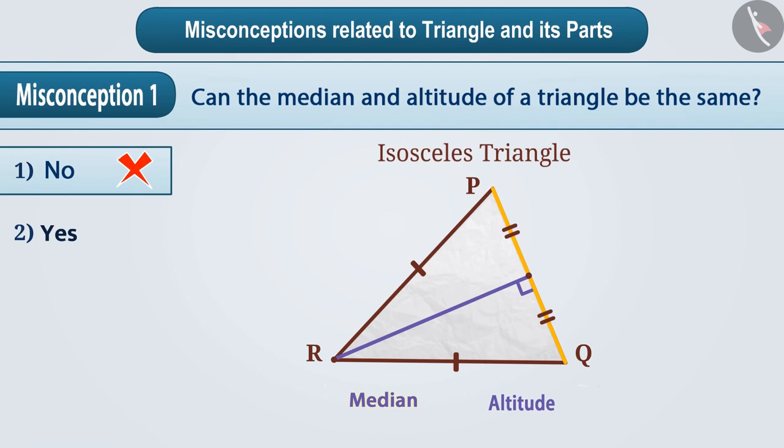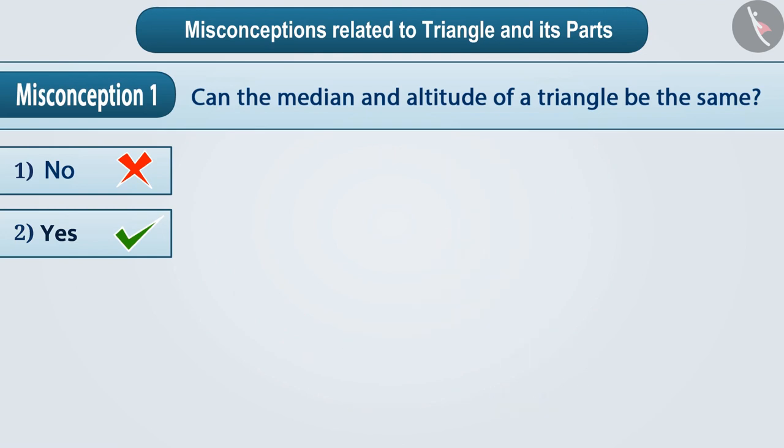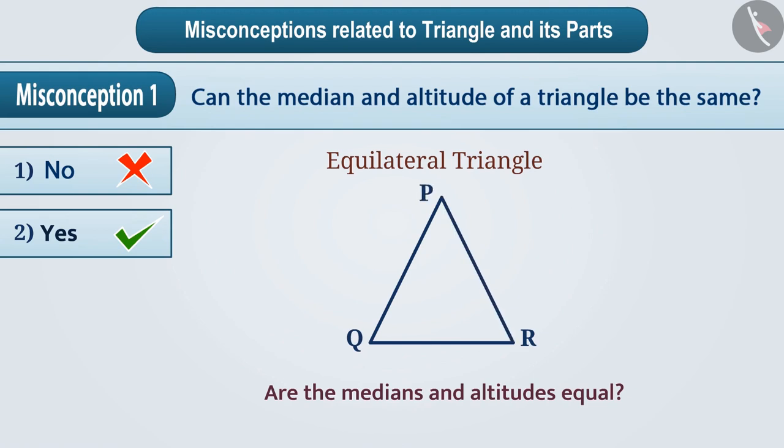Thus, we can say that in a triangle, the median and the altitude can be equal. So, option 2 is the correct answer. Similarly, you draw an equilateral triangle and find whether the median and altitude in it are equal or not.